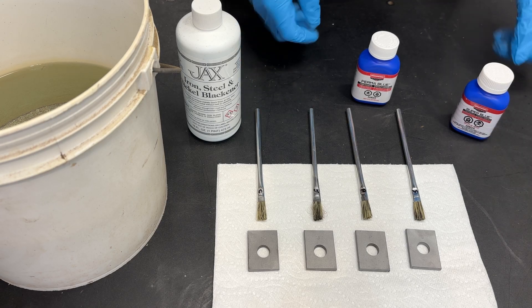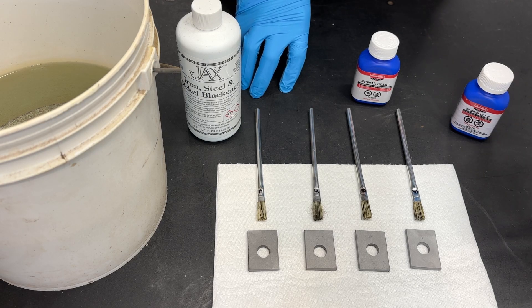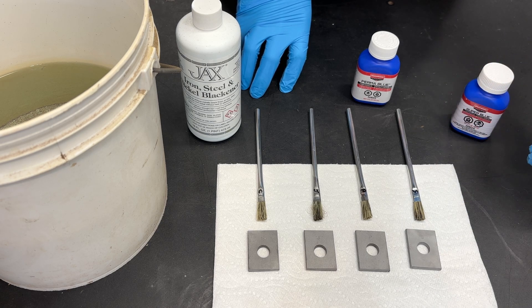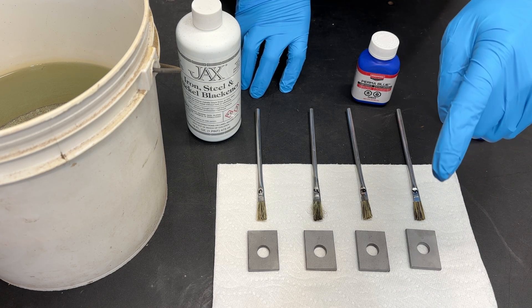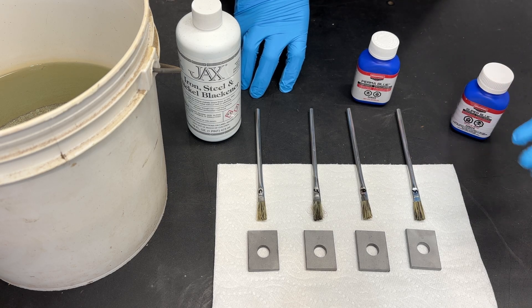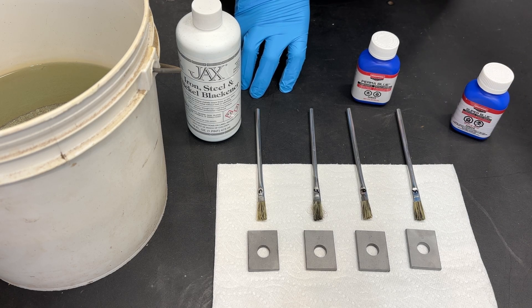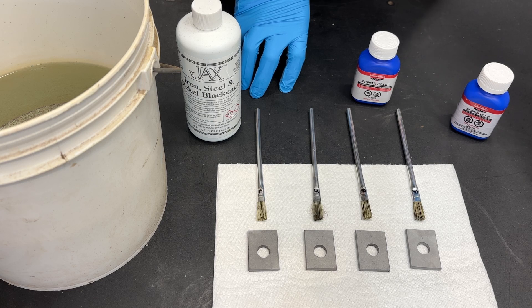Greetings fellow DIYer and welcome to my video. So you just spent a bunch of time machining a nice piece of steel. Let's say you made something as simple as a t-nut and you want to protect it. Well the obvious choice is a cold bluing solution, a black oxide solution.